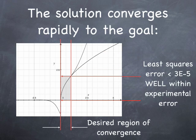Here I've made the gray box be the desired region of convergence. The least squares error for this, for the evolved solution is less than 3 times 10 to the minus 5, well within the experimental error of the Hodgkin-Huxley equation.